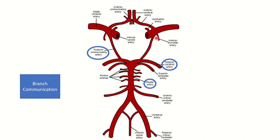The circle of Willis is formed by the vertebral basilar system and the internal carotid artery system. The front part is the carotid system and the back part is from the vertebral basilar system. The posterior cerebral artery communicates with the internal carotid artery via the posterior communicating artery. There is also an anterior communicating artery which joins the anterior cerebral arteries.